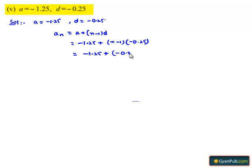If we multiply, we get -0.25n, and minus into minus is plus 0.25. Here, -1.25 + 0.25 is nothing but -1, plus -0.25n, which can be written as -1 - 0.25n.